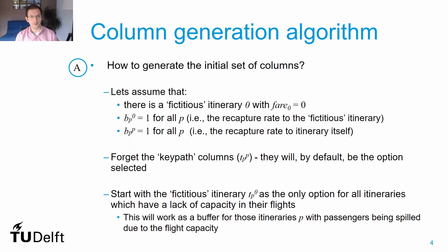Let's start with point A: how to generate the initial set of columns. This depends on the problem we are solving. In most cases, a heuristic or the creation of slack variables is needed to define an initial set of columns that makes the problem solvable. In the case of our problem, this is even easier. We can use our knowledge of the passenger mix flow problem and benefit from the key path formulation adopted in the previous video lectures.